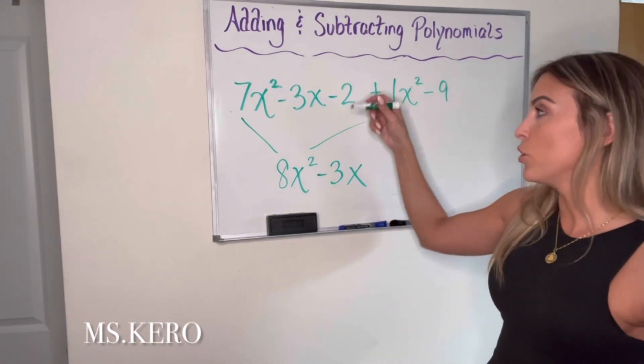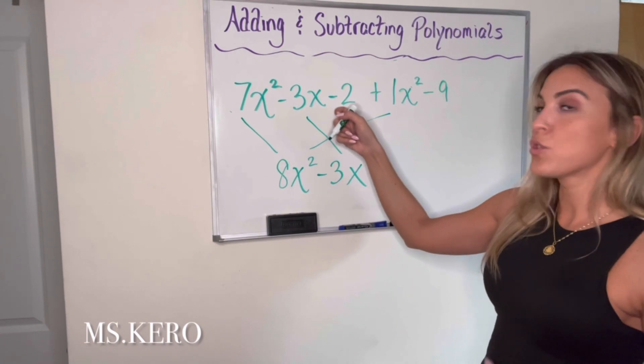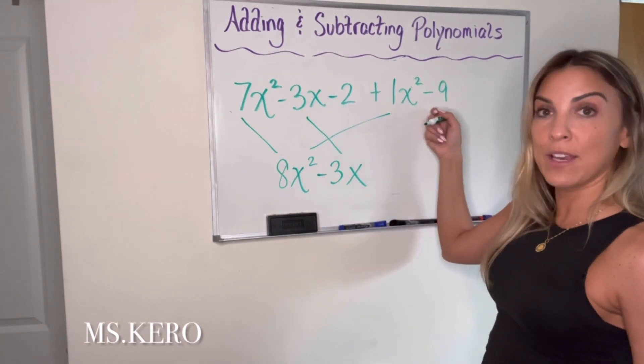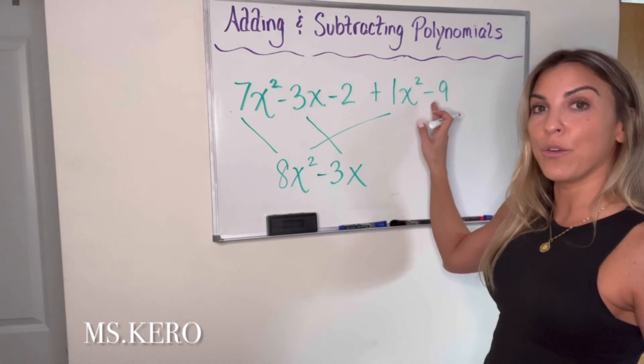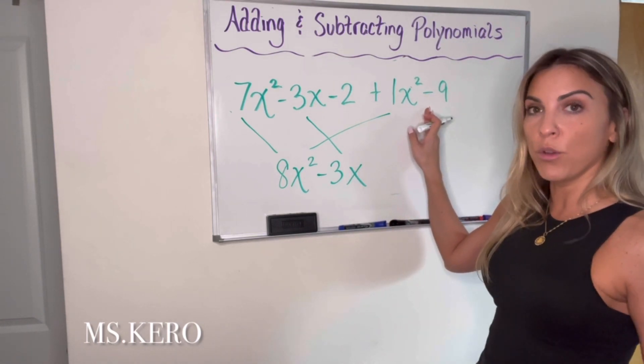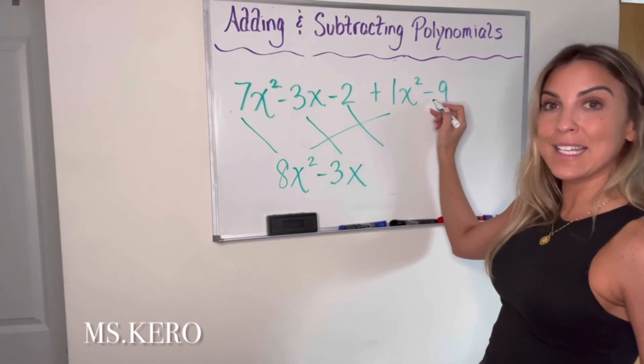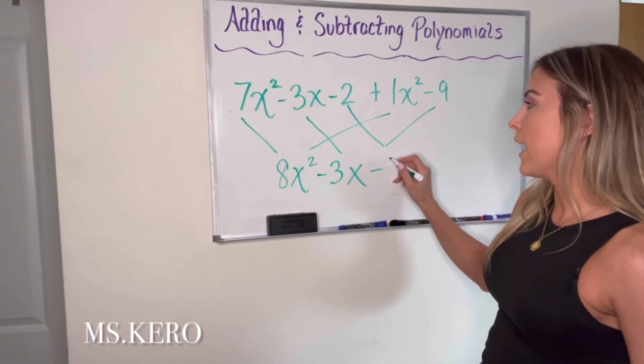Next, I have a negative 2. So that guy came down. Negative 2. So now I'm just looking for other numbers, other constant terms that are here. And I see a negative 9. Again, remember, you're looking at the sign in front of the term to tell you if we're adding or subtracting. So this is saying negative 2 minus 9, which gives me negative 11.